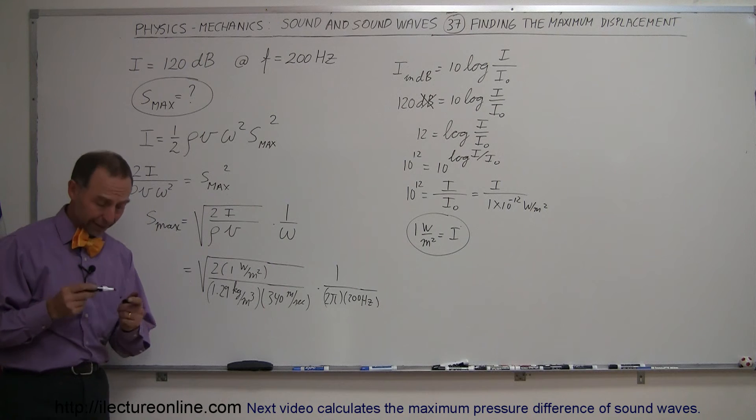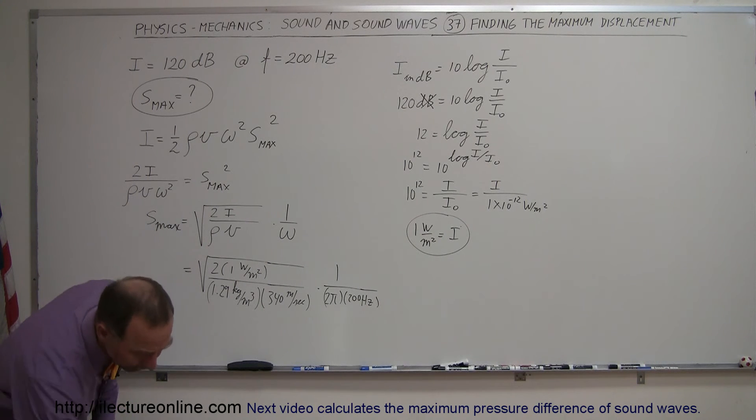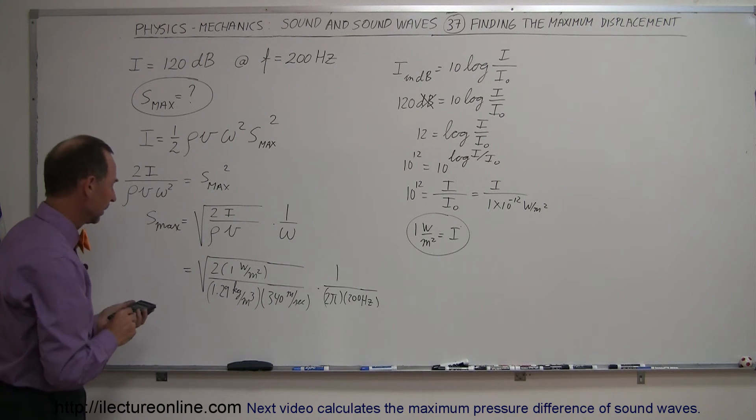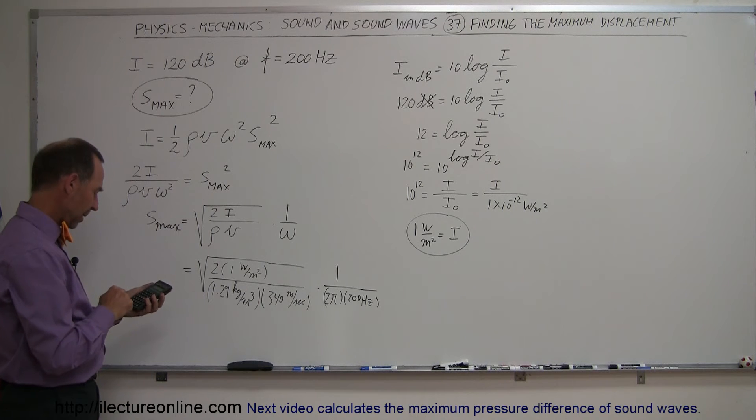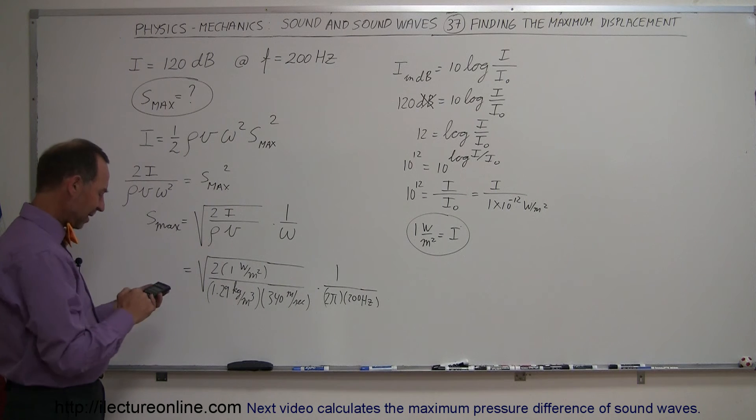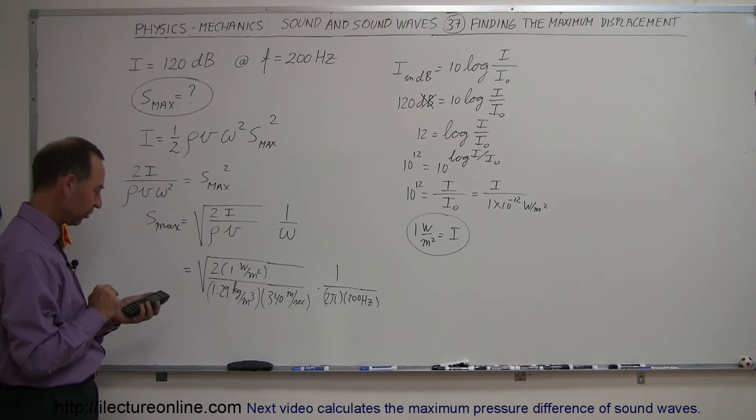I need a calculator, and let's see what that is equal to. So we have 2 divided by 1.29, divided by 340, and take the square root of that, divide that by 2, divide that by π, and divide that by 200, equals...